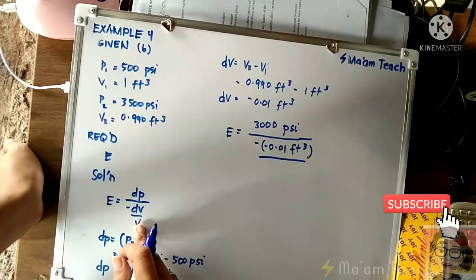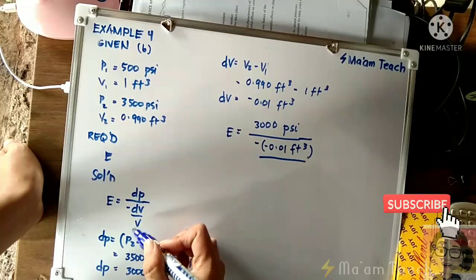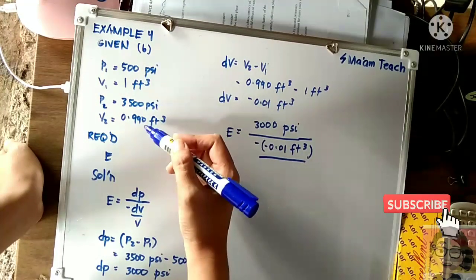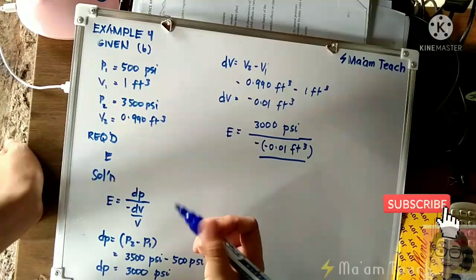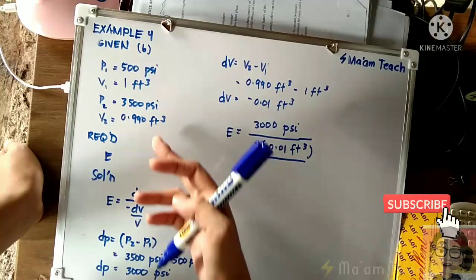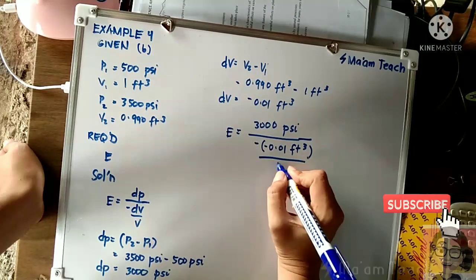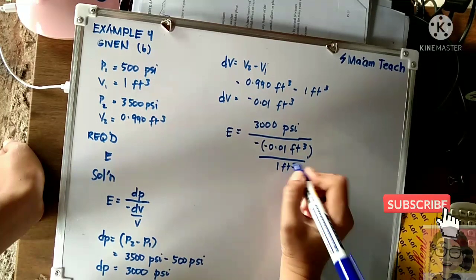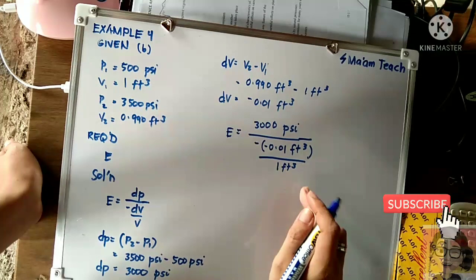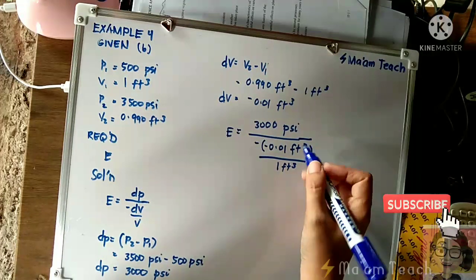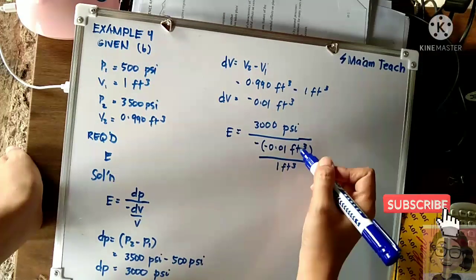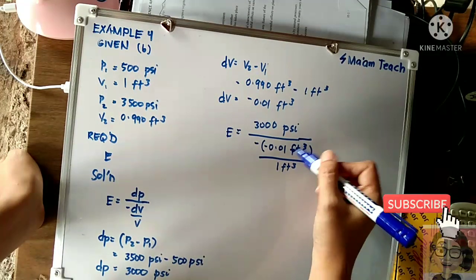All over - take note that our variable here is V. So what kind of V is it, the V sub 1 or the V sub 2? This V refers to the initial volume, so we will substitute 1 cubic foot. Now in this case, as you can see, the 1 cubic foot will be canceled out, so we will be left with the unit psi.